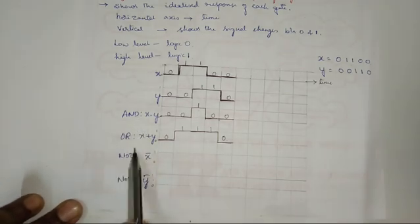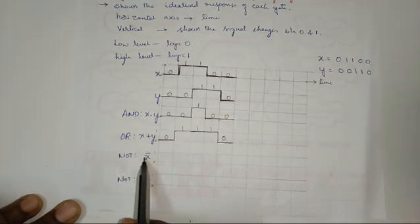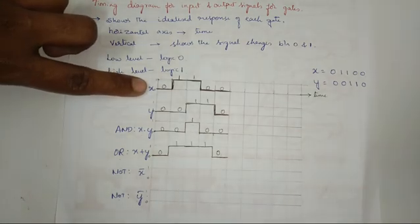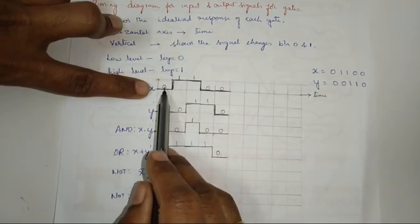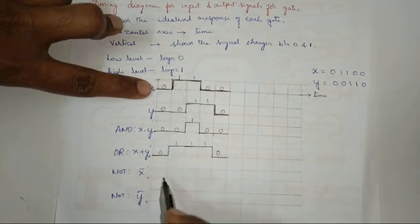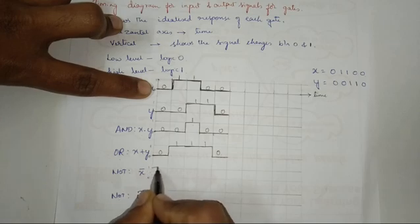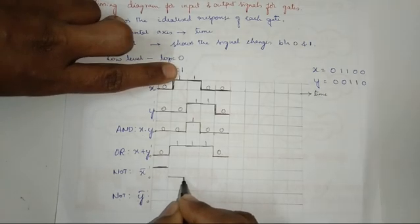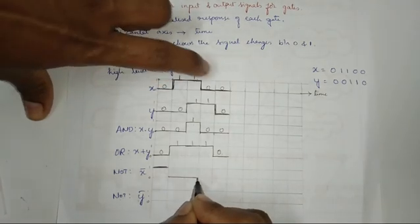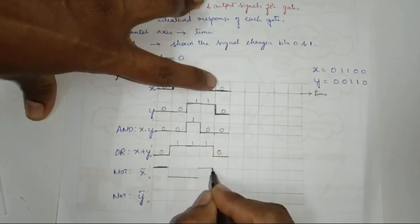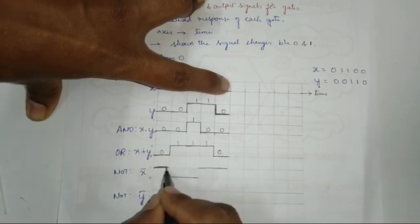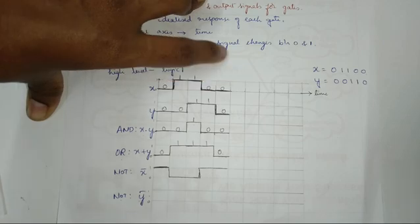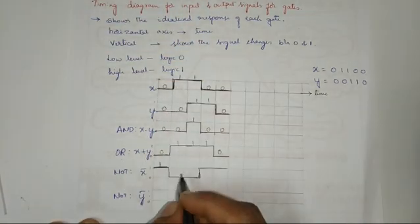Next, for the NOT gate, it is NOT of X, so X bar. Whatever input we have in X, we have to invert it. The input is 0, so the inversion is 1. I have marked 1 in the timing diagram. For 1, the inversion is 0. For 1 it is 0, and for 0 it is 1. Again for 0 it is 1. Let me join this.